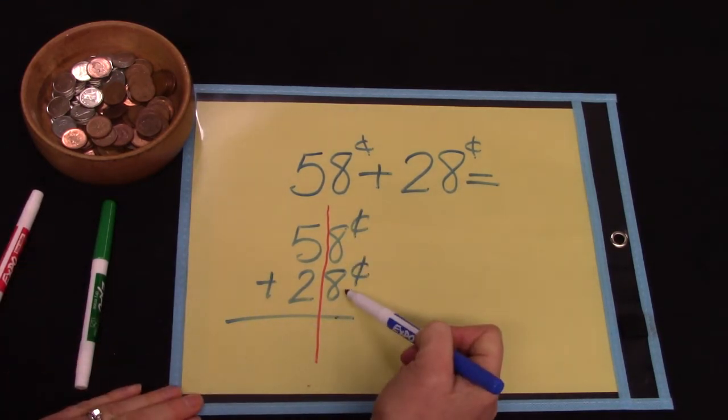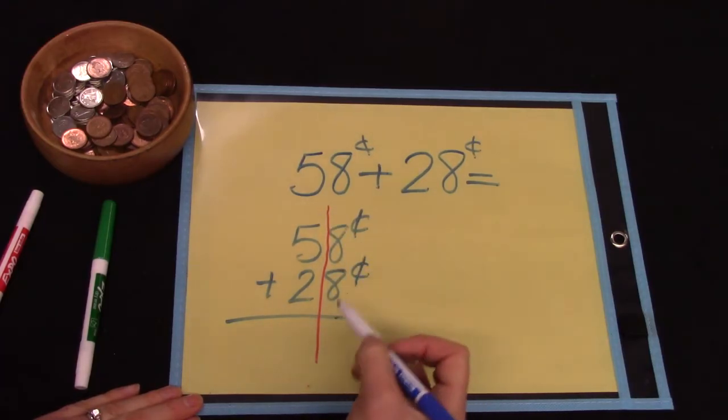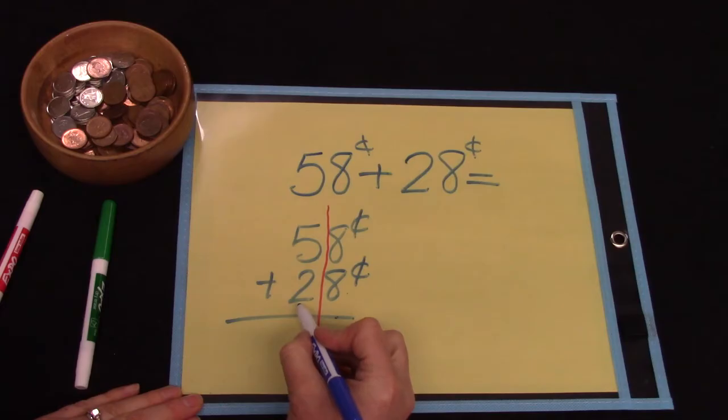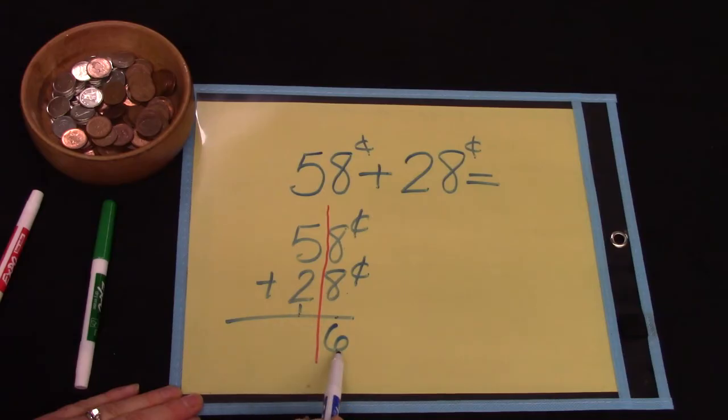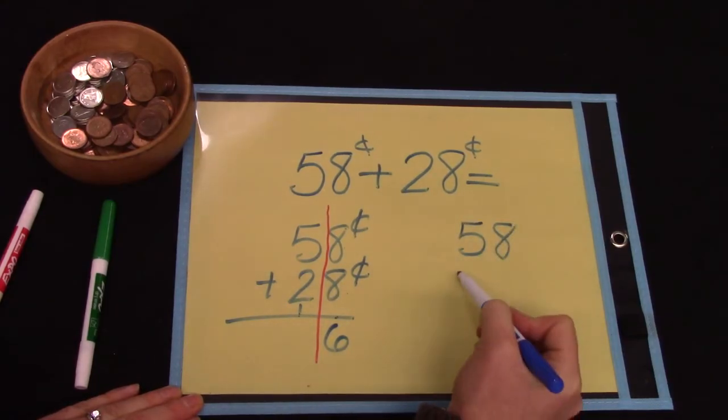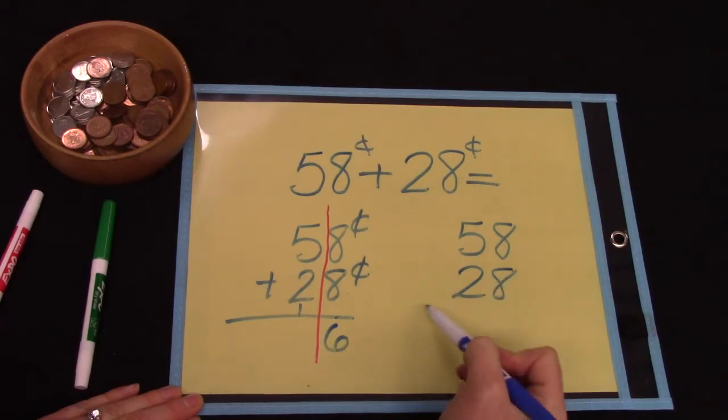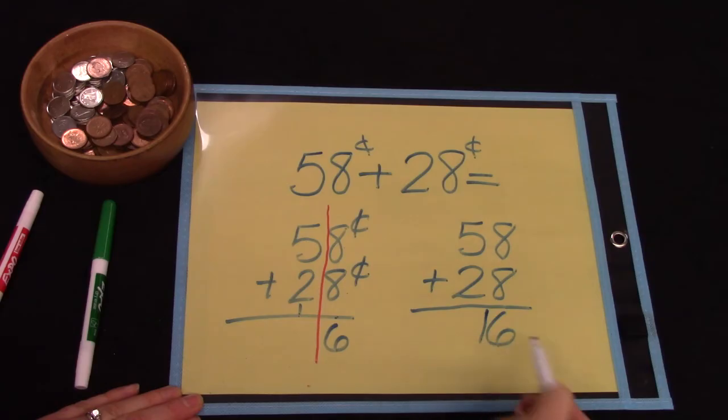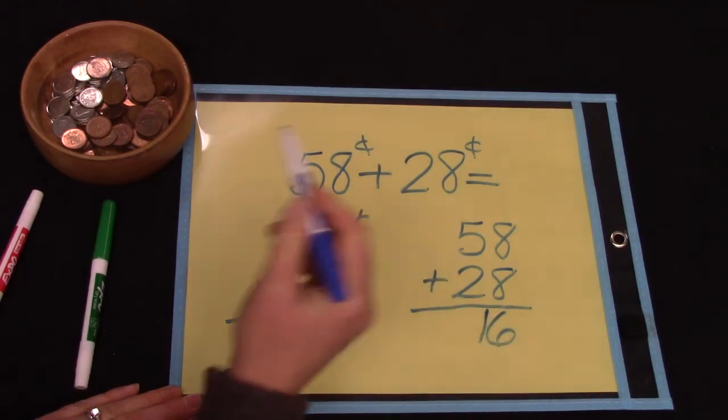Well here we have 8 plus 8 and that is a doubles fact and we know that 8 plus 8 is 16. We are going to write our 16 this way, a 1 and a 6. Well what if we didn't write it that way? What if we forgot and we were being a little bit silly and we wrote our 16 just like that?